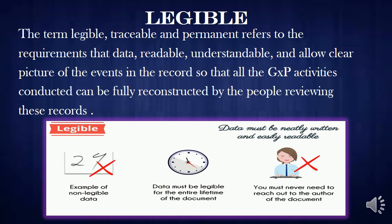Next is Legible. In simple words, the data should be understandable. Legible, traceable, and permanent refers to the requirement that data is readable and understandable, allowing a clear picture of events in the record so that all GXP activities conducted can be fully reconstructed by reviewers. In the example, you can see non-legible data where it is very difficult to understand whether the entry is the number 27, 29, or something else. The data must be legible for the entire lifetime of the document, and you must never need to reach out to the author to understand the data.